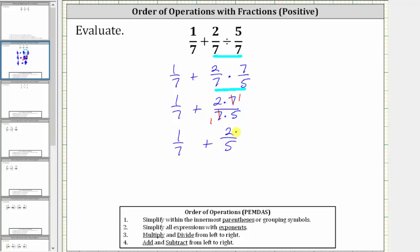And now of course the last step is to determine the sum. In order to add fractions, we must obtain a common denominator, hopefully the least common denominator. In this case, because the only common factor between seven and five is one, the least common denominator or least common multiple of seven and five is seven times five, which is equal to 35.